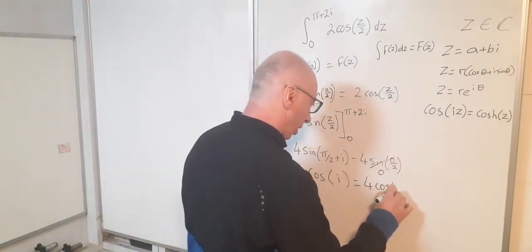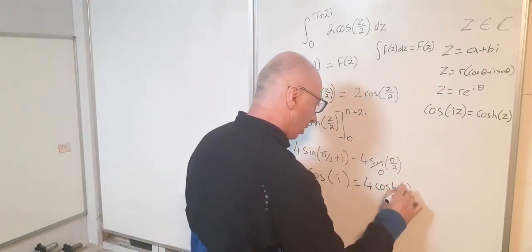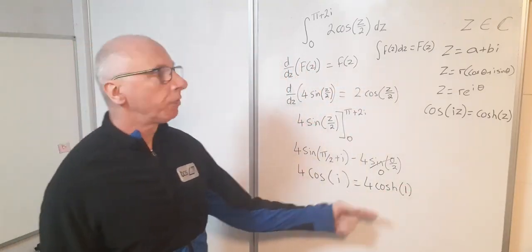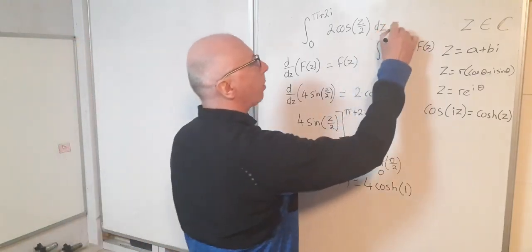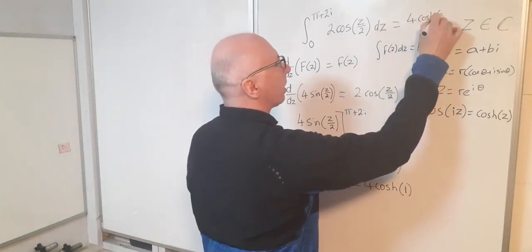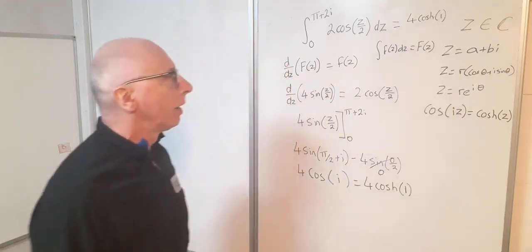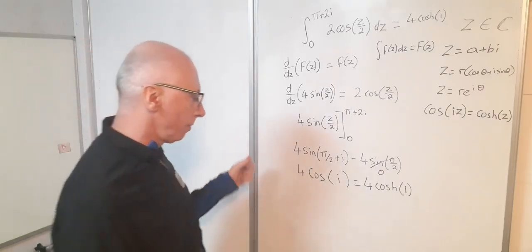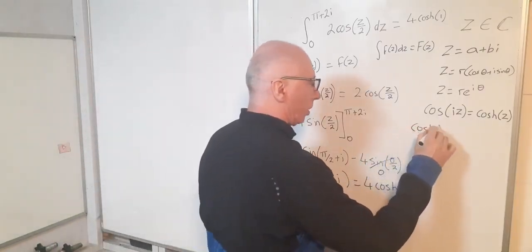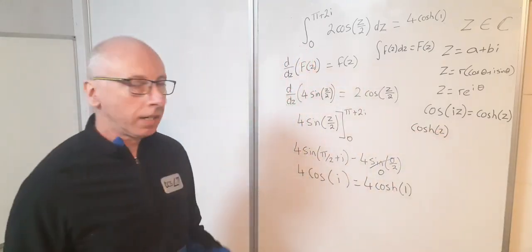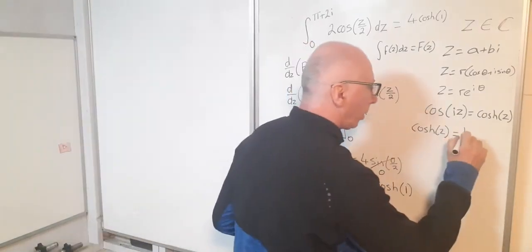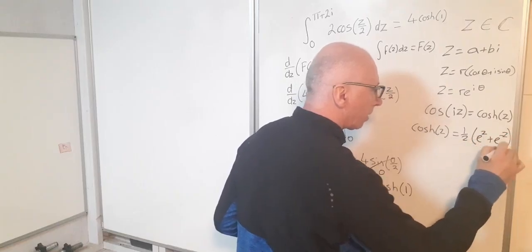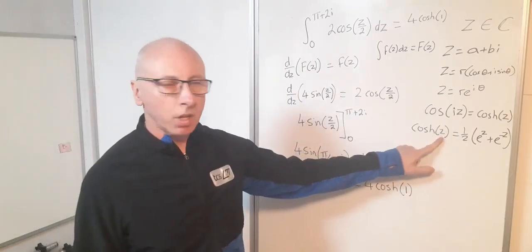So that's 4 cosh of 1. Now that would be also a reasonable result for my integration, but we can also do better than that. So 4 cosh of 1, I could turn that into some values with constants using exponential form. So I know cosh of some z gives me one half e to the z plus e to the minus z, where z is the input of the cosh function.